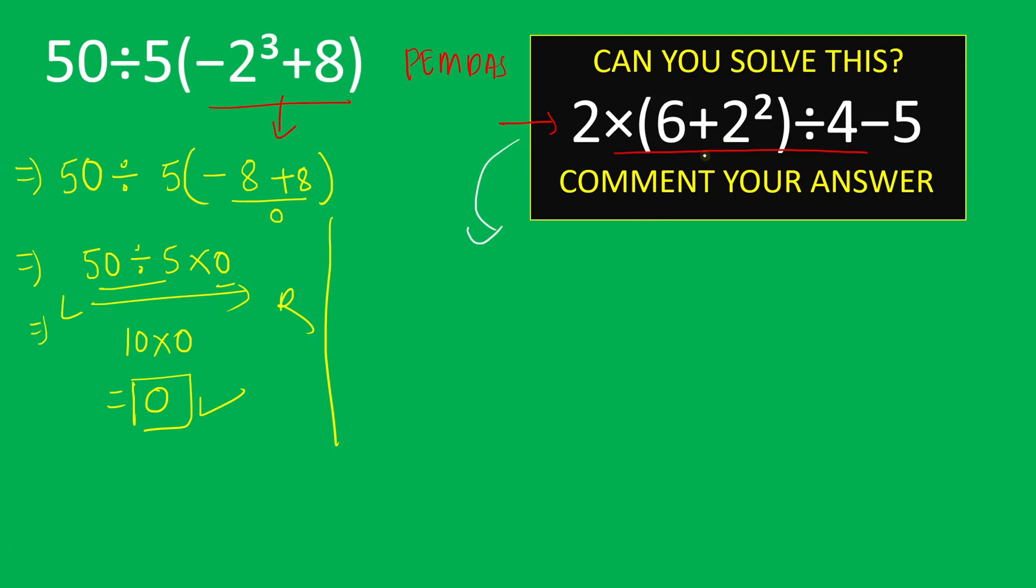So first we will solve this parenthesis part, which is 6 plus 2 squared. And here 2 squared is 2 times 2, which equals 4. So we will write 2 times parenthesis 6 plus 4, close parenthesis, divided by 4 minus 5. Now we will solve this: 6 plus 4 equals 10. So we will write 2 times 10 divided by 4 minus 5.